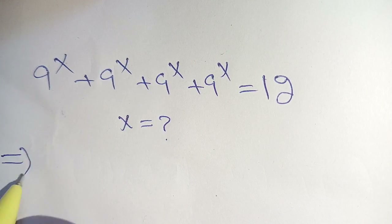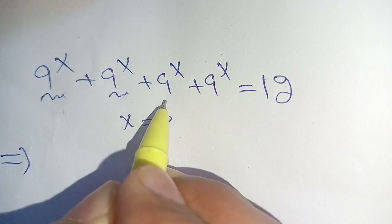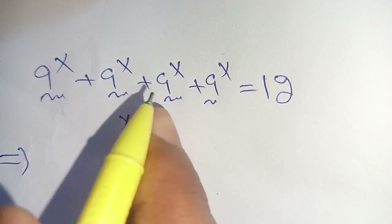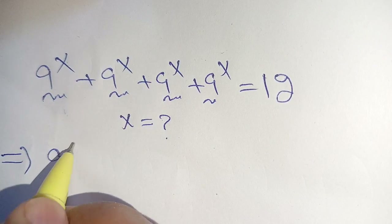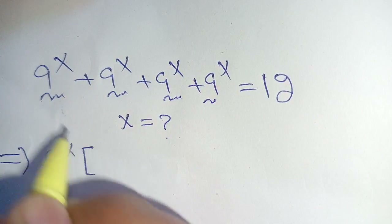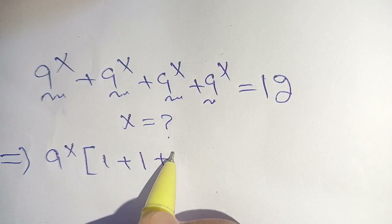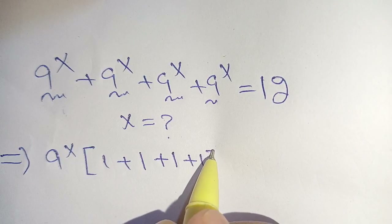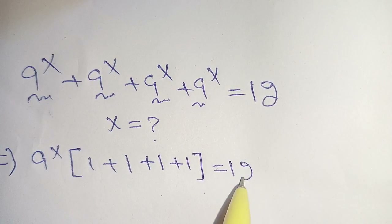Here we can take out 9 to the power x from each of these terms on our left hand side, and we get 9 raised to the power x times the remaining 1 plus 1 plus 1 plus 1, in brackets, is equal to 12.